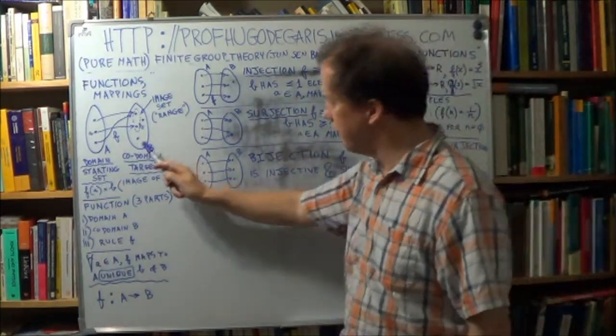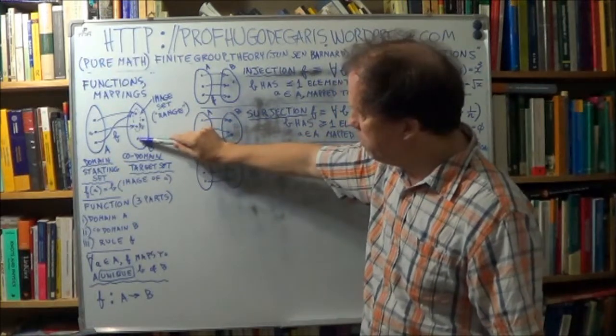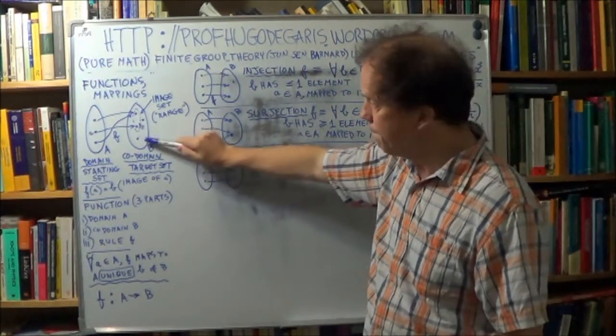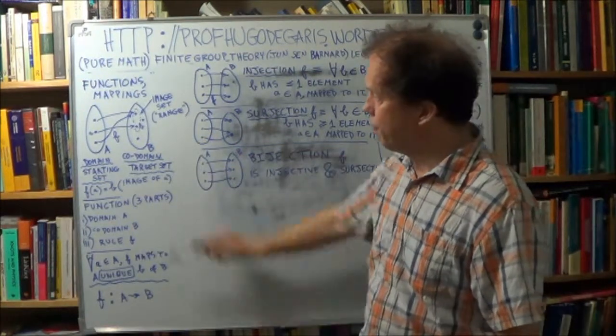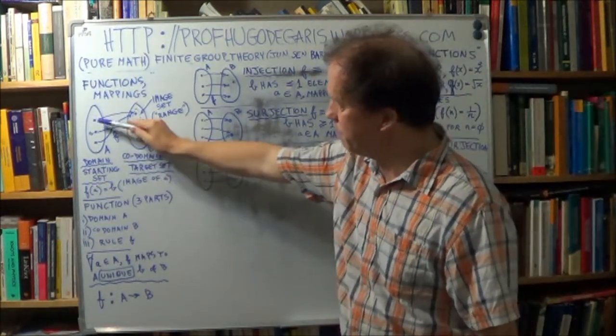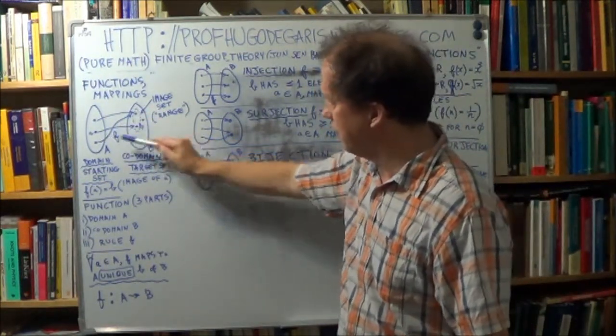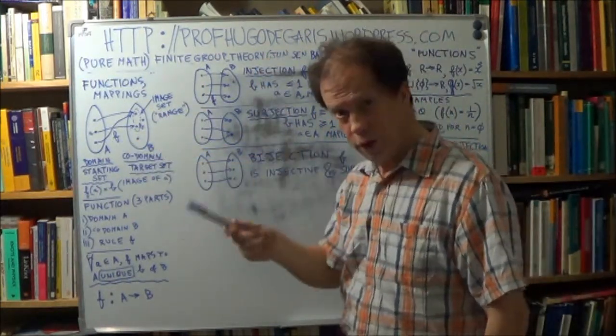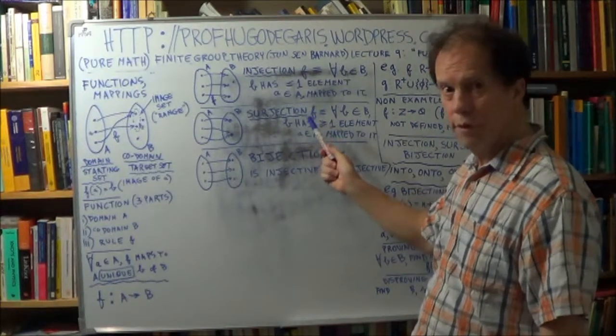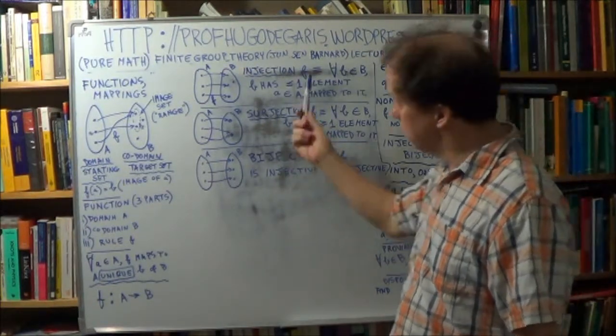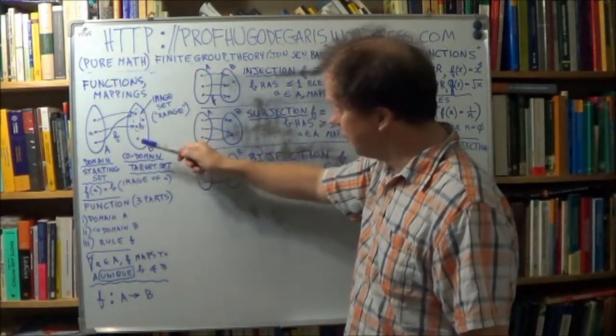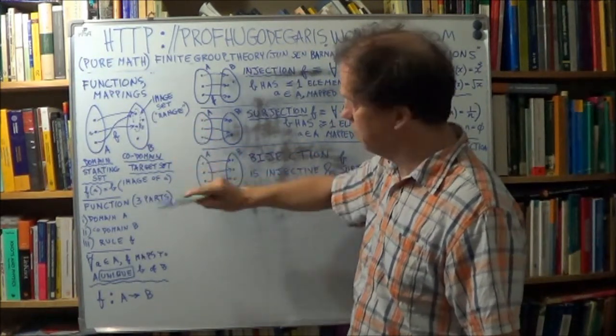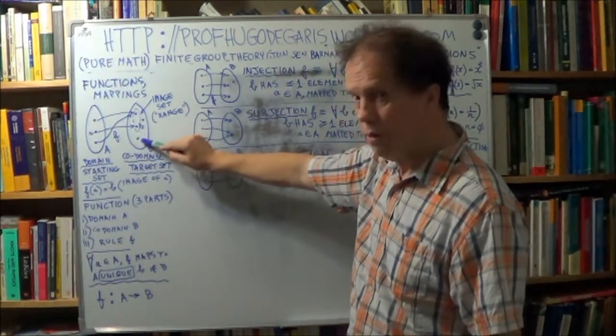Now, to give you a counter example, have a look at this set. This member here is not mapped to. This one here. Therefore, this mapping that maps that one to that, and that to that, and that to that, this mapping here is not surjective. Why? Well, because it's not the case that every member gets mapped to. This one did not get mapped to.